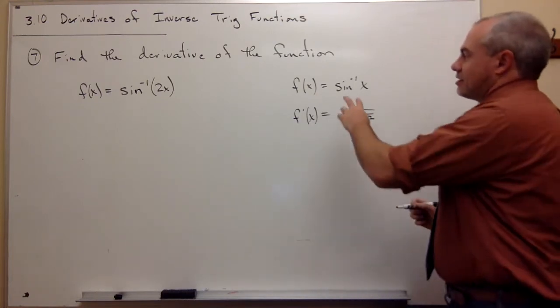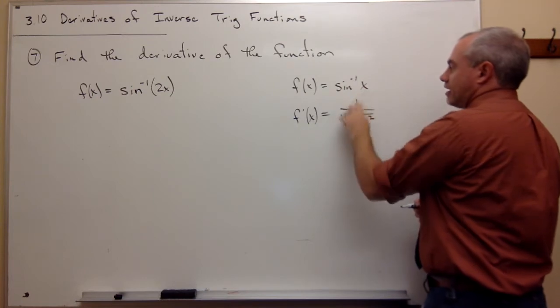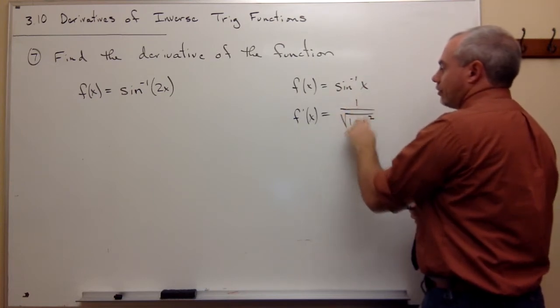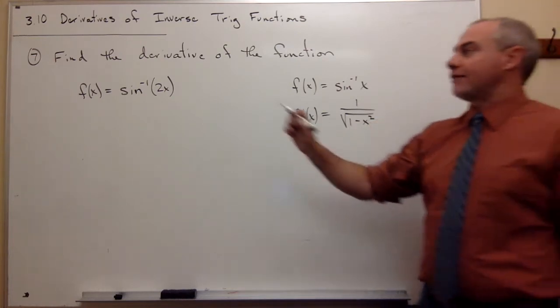So what this tells me is if I take the derivative of sin⁻¹(something), it's going to be 1/√(1-something²), and that's what I have to remember when I'm taking the derivative.